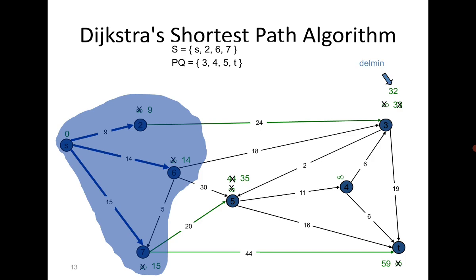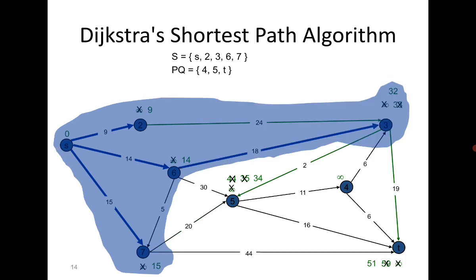We go to vertex 3. From vertex 3, t is reachable with distance 51 (9 plus 24 plus 19). Also the distance to vertex 5 gets updated from 35 to 34, so from s to vertex 5 you can now reach with a distance of 34.